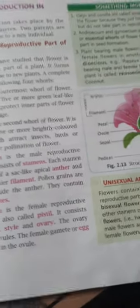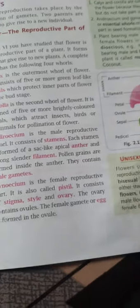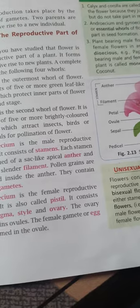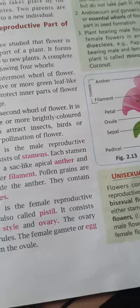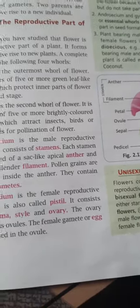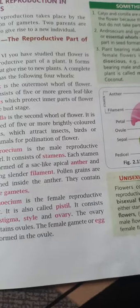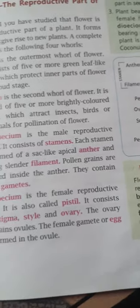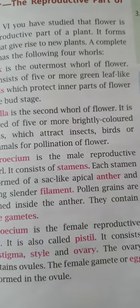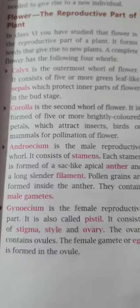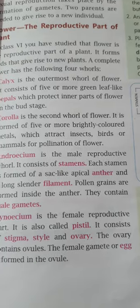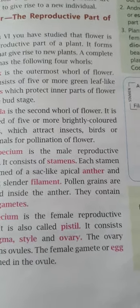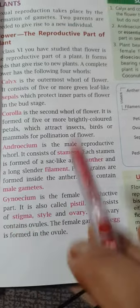The last whorl of the flower is the gynoecium, which is the female reproductive part of the flower. It is composed of pistils and occupies the central position of the thalamus. The stigma, style, and ovary are the components of the pistil. The ovary produces ovules internally. Through meiosis, ovules produce megaspores, which in turn develop into female gametophytes, and as a result egg cells are produced. Gynoecium is also called pistil.